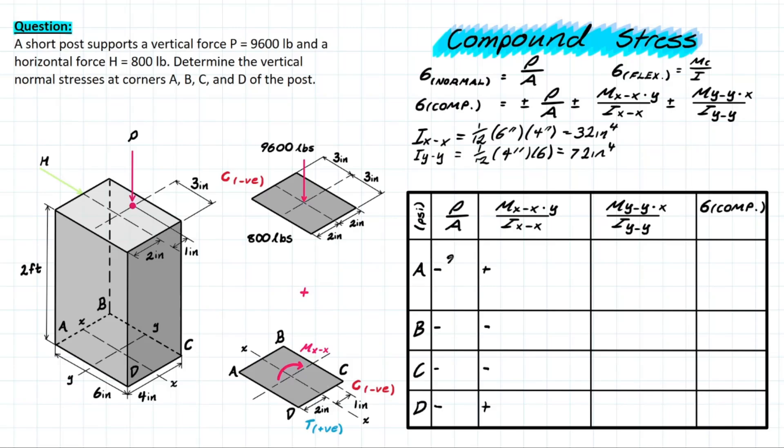So P over A we know is going to be 9600 for that point load and that is over the area which is 4 times 6 and solving for that you will be left with a negative 400. This is all in psi and we can just go ahead and fill that in for all of these separate points because that is going to be the influence across the entire area.